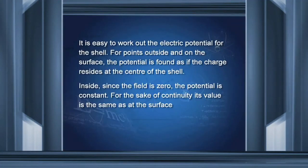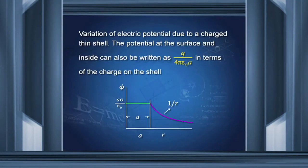It is easy to work out the electric potential using minus dφ/dR equal to E. For R equal to A, the potential is Aσ/ε₀. For R greater than A, it is A²σ/ε₀ into 1/R, because the charge behaves as if concentrated at the center. For R less than A, since E is 0, the potential must have a constant value equal to the value at the surface so that there is no discontinuity. So from the center to the surface, the potential is constant, and outside it varies as 1/R.